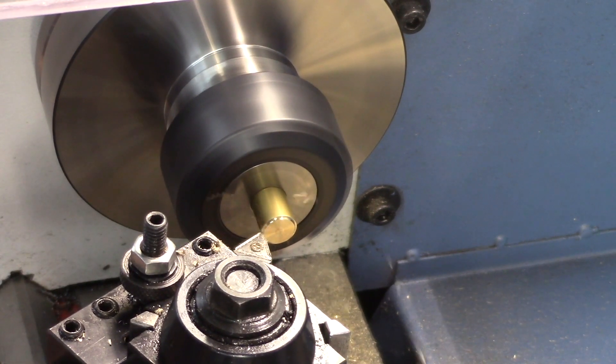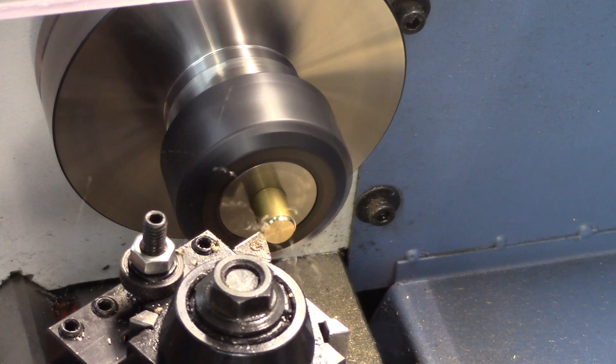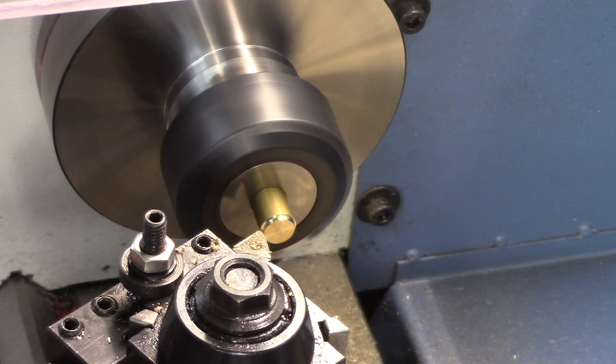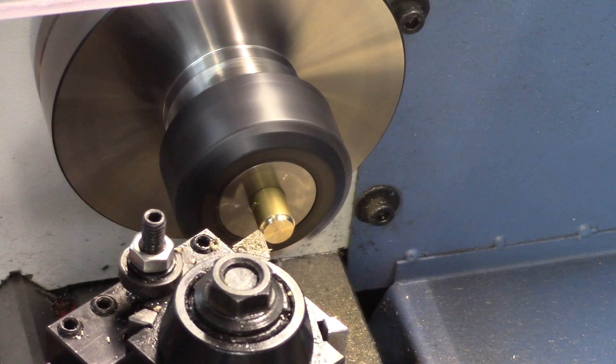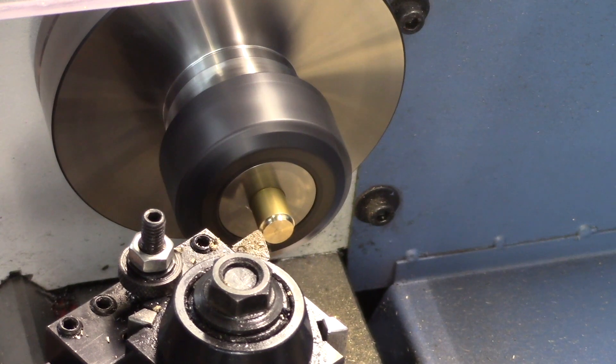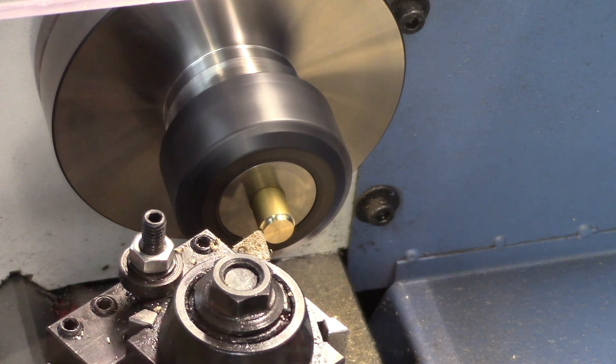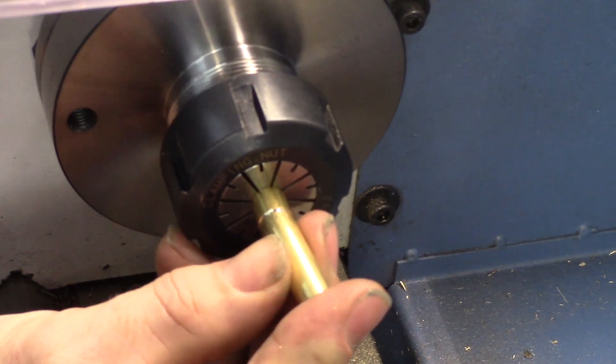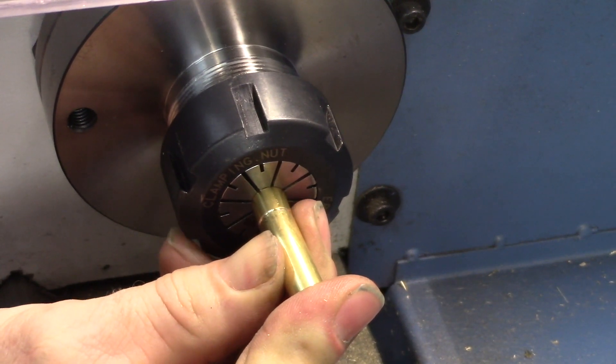The end cap for the cylinder is turned from the same brass rod with a recess that will fit the cylinder. We are looking for a sliding fit to allow room for the end cap to be soldered to the cylinder.